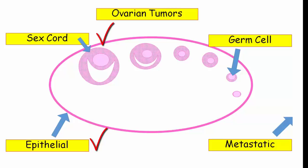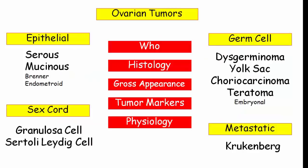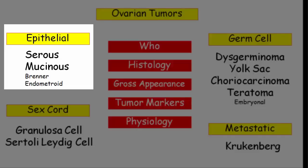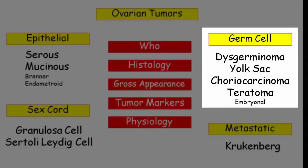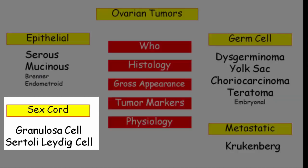Now that we have our broad outline, we can organize all the tumors we will need to know, starting with the most common epithelial tumors. These include serous cystadenocarcinoma and mucinous cystadenocarcinoma. It also includes the much less common, and much less commonly tested, Brenner and endometrioid tumors. The germ cell tumors include dysgerminomas, yolk sac tumors, choriocarcinoma, teratoma, and embryonal. Sex cord tumors include granulosa cell tumors and Sertoli-Leydig cell tumors. Even though these cells are more commonly seen in the testicle, they can cause ovarian tumors too. Rounding out our tumors is the metastatic Krukenberg tumor.